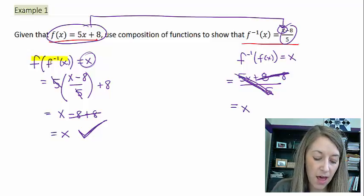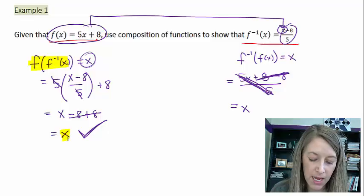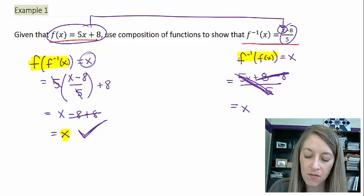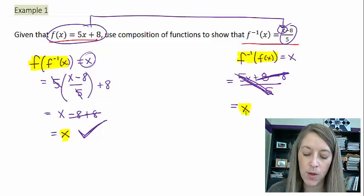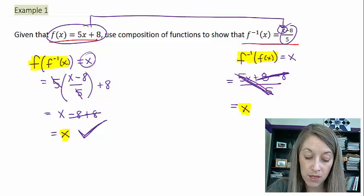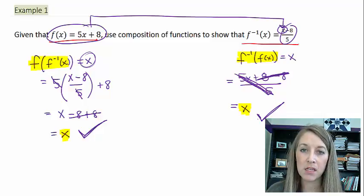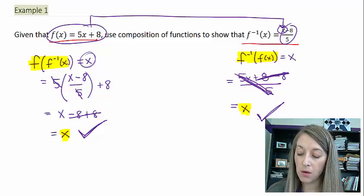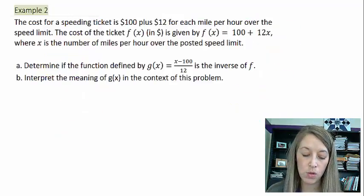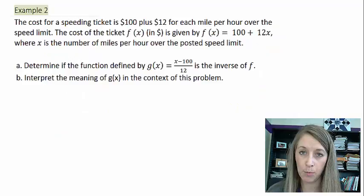So I have f of f inverse is equivalent to x and I have f inverse of f of x is equivalent to x. So since both of these hold true, that means that these are in fact inverses of each other. Okay, so now that we see what we're doing, let's go ahead and do this on a second example.